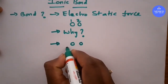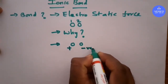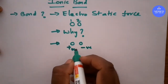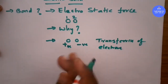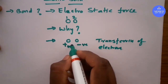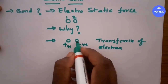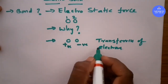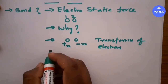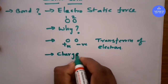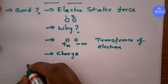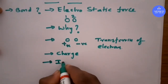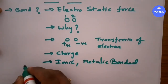Why does electrostatic force form between two atoms? Because one atom becomes a positive ion and another atom becomes a negative ion. Atoms become ions or charges because of the transfer of electrons. Whenever there is a positive ion and negative ion, there is an electrostatic force due to the transfer of electrons.